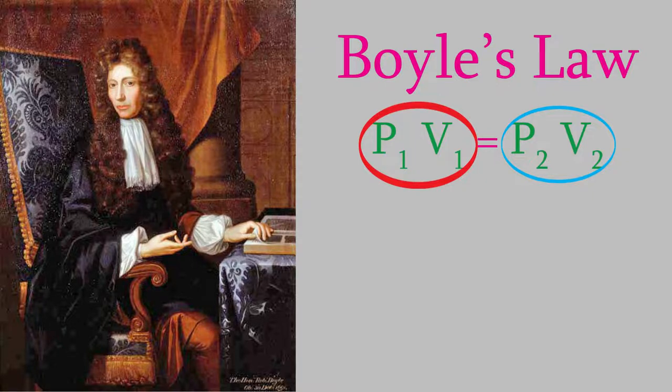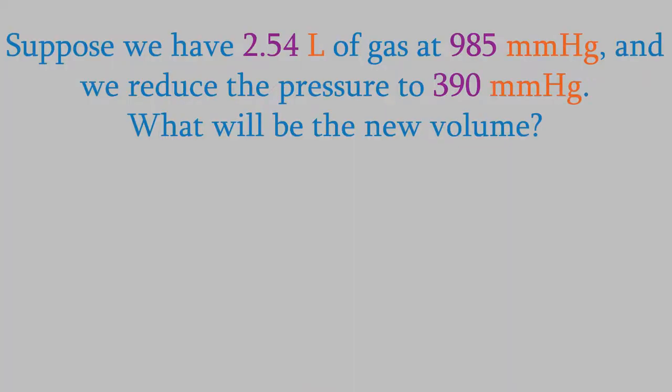For example, if we have 2.54 liters of a gas at 985 millimeters of mercury, and we then drop the pressure all the way down to 390 millimeters of mercury, what will be the final volume? In order to find out, we'll just plug all this data into Boyle's Law.